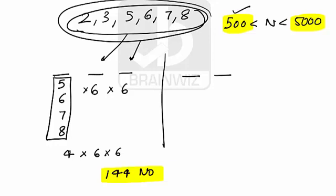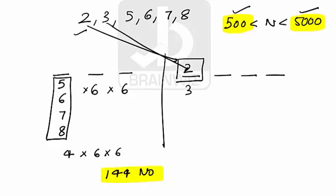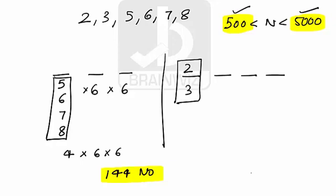Now let's look at the 4-digit numbers which are less than 5000. For numbers less than 5000, we focus on the first place. The digit 2 can settle here, and digit 3 can also occupy this place, but digits 5, 6, 7, and 8 cannot, because placing 5 or higher would make the number 5000 or more. So only 2 cases exist for the first place.